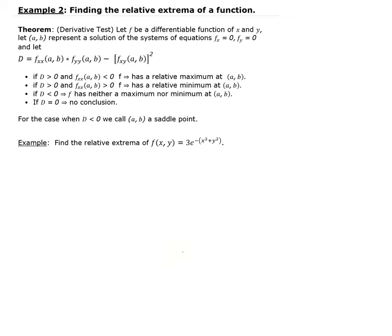In this example, we're going to find the relative extrema of the function f(x, y) = 3e^(-(x² + y²)). First, we need to find the partial of f with respect to x and the partial of f with respect to y, and then we need to set both of those equal to zero.